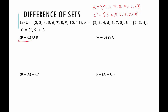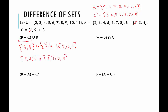Starting with the first example, we have the difference of B and C — everything in B that's not in C. They both have a 2, so that's out. B has a 3 and a 4 that C doesn't, so the difference B minus C is the set containing 3 and 4. We union that with B complement, which is 5, 6, 7, 8, 9, 10, 11, giving us 3, 4, 5, 6, 7, 8, 9, 10, and 11 — basically the entire universe without 2.